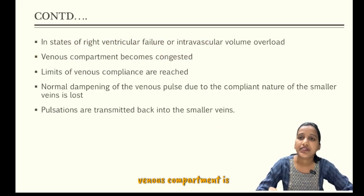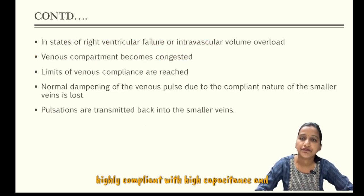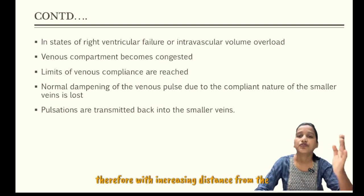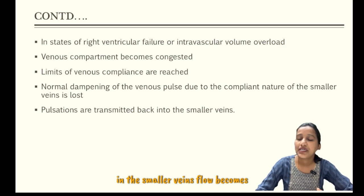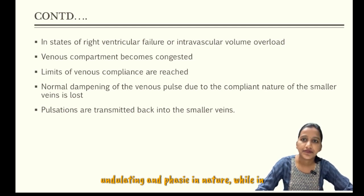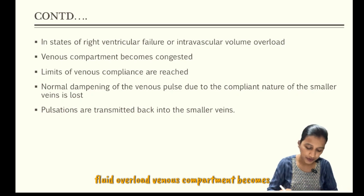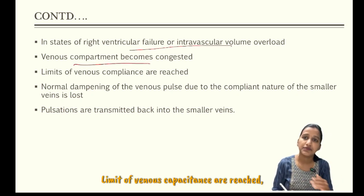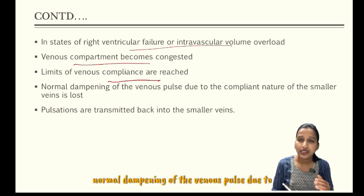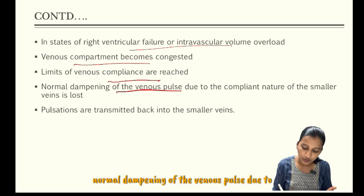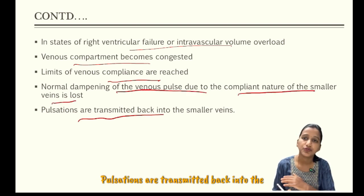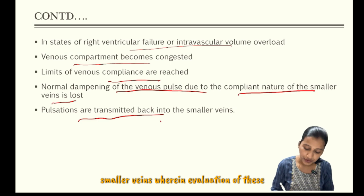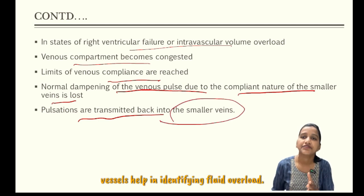Generally under normal circumstances, the venous compartment is highly compliant with high capacitance, and therefore with increasing distance from the heart, the venous pulses are dampened so that in the smaller veins flow becomes undulating and phasic in nature. While in states of right ventricular failure and fluid overload, the venous compartment becomes congested, the limits of venous capacitance are reached, and normal dampening of the venous pulse due to the compliant nature of the small veins is lost. Pulsations are transmitted back into the smaller veins, wherein evaluation of these vessels helps in identifying fluid overload.